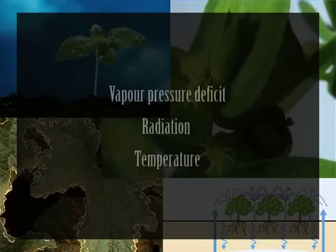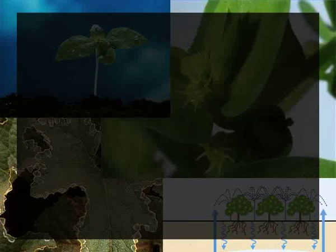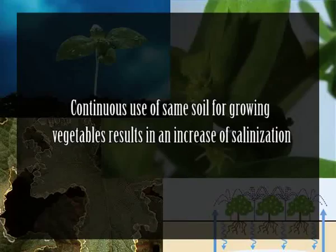Soil type and environmental factors such as vapor pressure deficit, radiation, and temperature may further alter salt tolerance. In fields, salt levels fluctuate seasonally and spatially, and variation occurs due to the circumstances influencing each particular plant. In addition, the continuous use of the same soil for growing vegetables results in an increase of salinization.